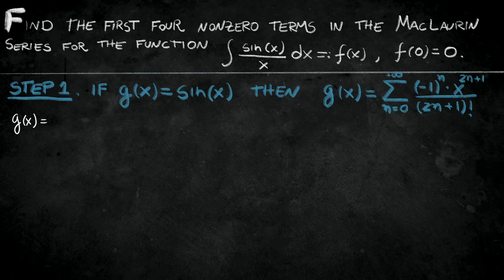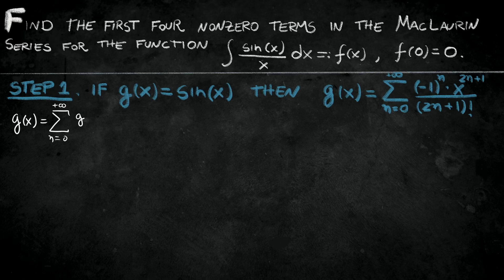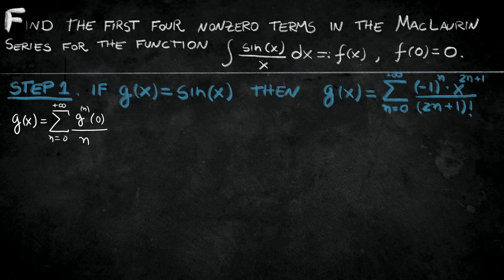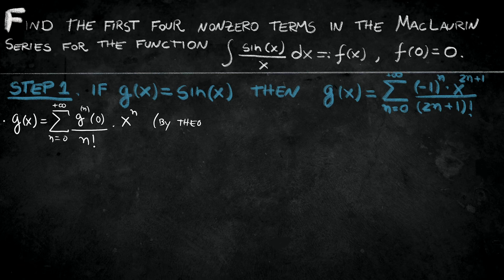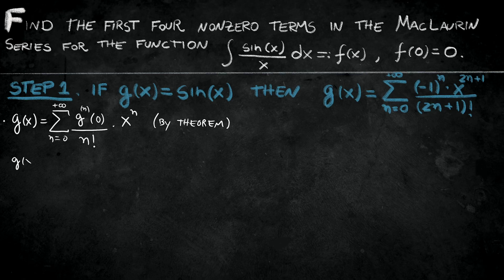We're going to use a theorem that says I can write g of x as a series from n equals 0 to positive infinity of g, n derivative of g, when you apply the point 0, because I'm assuming we're working with the Maclaurin series and Maclaurin series is a Taylor series at x equals 0. So I have to apply 0 here over n factorial times x to the power n. So if we start computing the derivatives, you're going to realize the derivatives repeat in a cycle of 4.